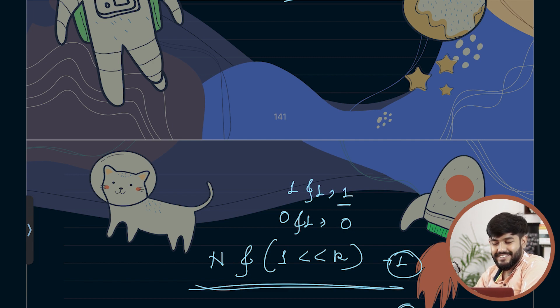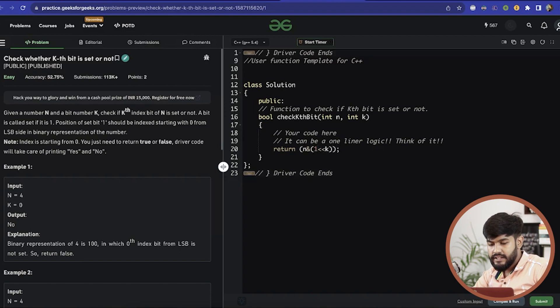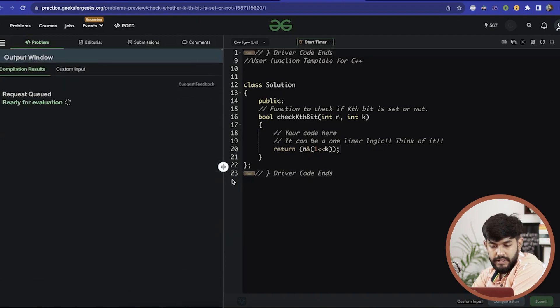Simple enough. Let us move to the implementation. So I would say return n AND 1 left shift by k, and this should be giving me a correct answer. Okay, seems correct.